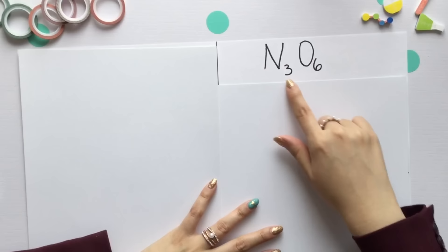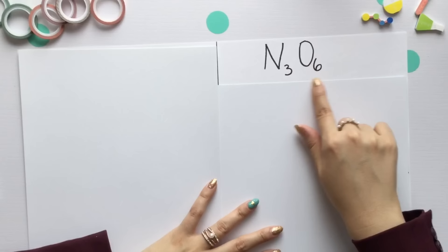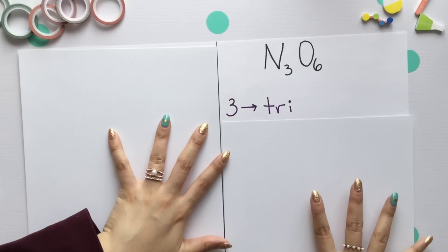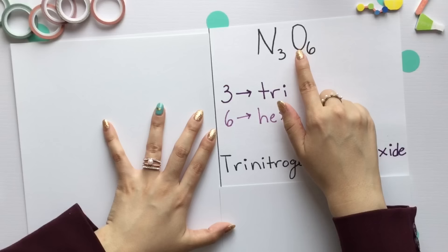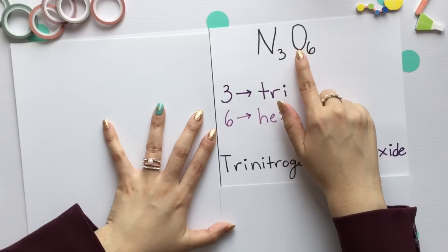We have N3O6. We'll look at the different subscripts and figure out what prefix they need. Our 3 meaning tri and 6 means hexa. We'll put tri and the name of our non-metal, which was nitrogen, then hexa and the name of our other non-metal ending in ide. We have trinitrogen hexaoxide.